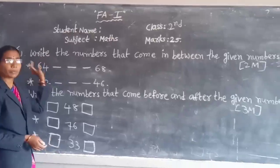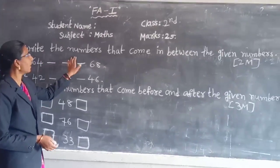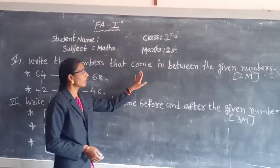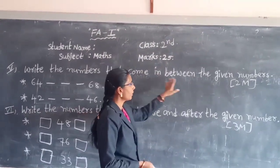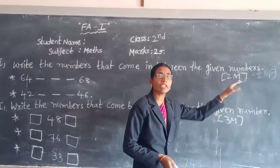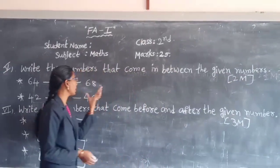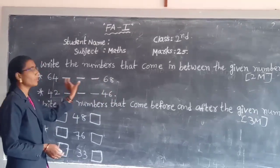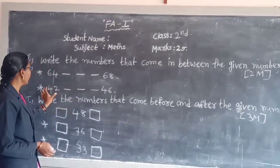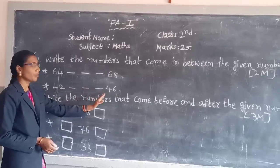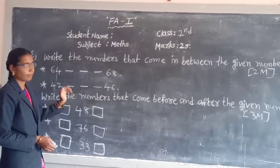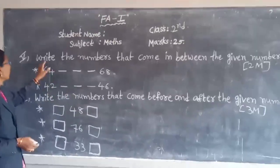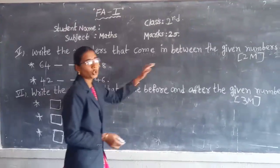Next, fifth means: write the numbers that come in between the given numbers. Sixty-four and sixty-eight, write the numbers in between. Next, 42 and 46, write the numbers in between. Fifth bit, 2 points.